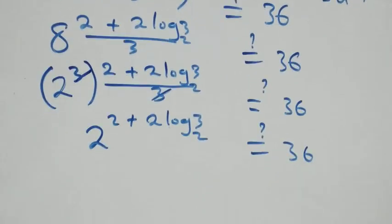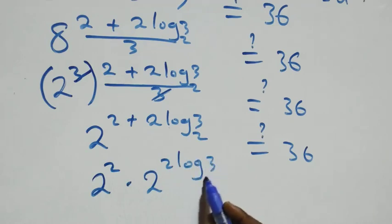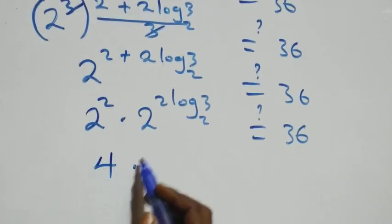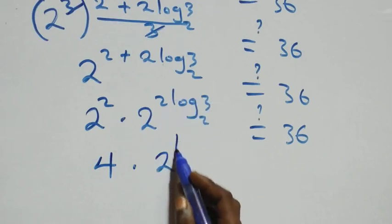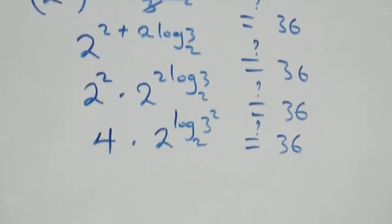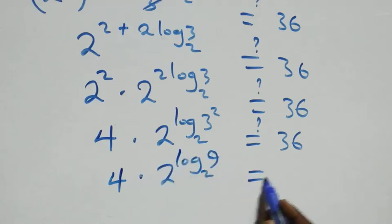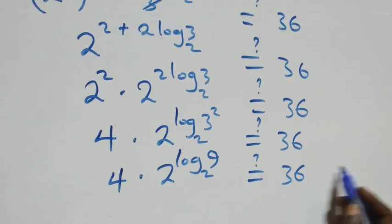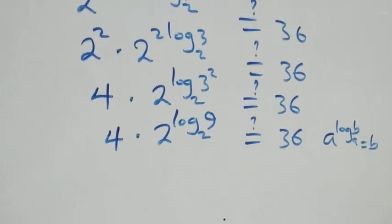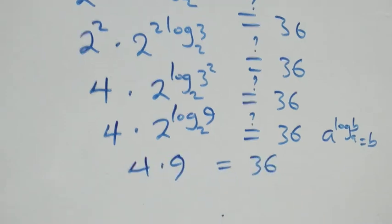We separate this as 2 squared times 2 raised to power 2 log 3. That is 4 times 2 raised to power log(3 squared), which equals 4 times 2 raised to power log 9. Using the identity a raised to power log base a of b equals b, we get 4 times 9, which is 36.